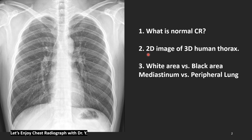The second point is that a chest radiograph is a two-dimensional image of a three-dimensional human body structure of the thorax, so we need imagination to think and diagnose the film. Third, we will look at the white area and the black area. The white area is the central area with many anatomic structures — the mediastinum — a high attenuation area. The black area is the peripheral lung field, made of pulmonary artery, pulmonary vein, airway, and alveoli.